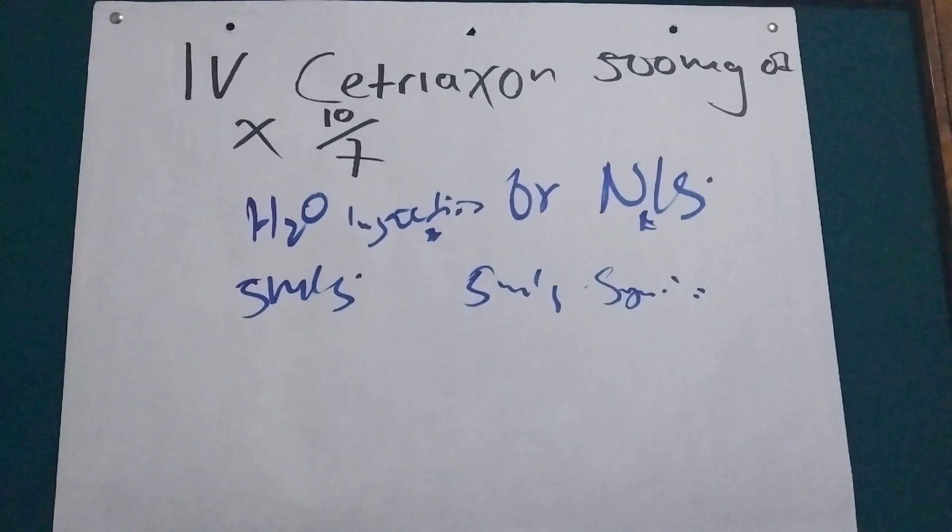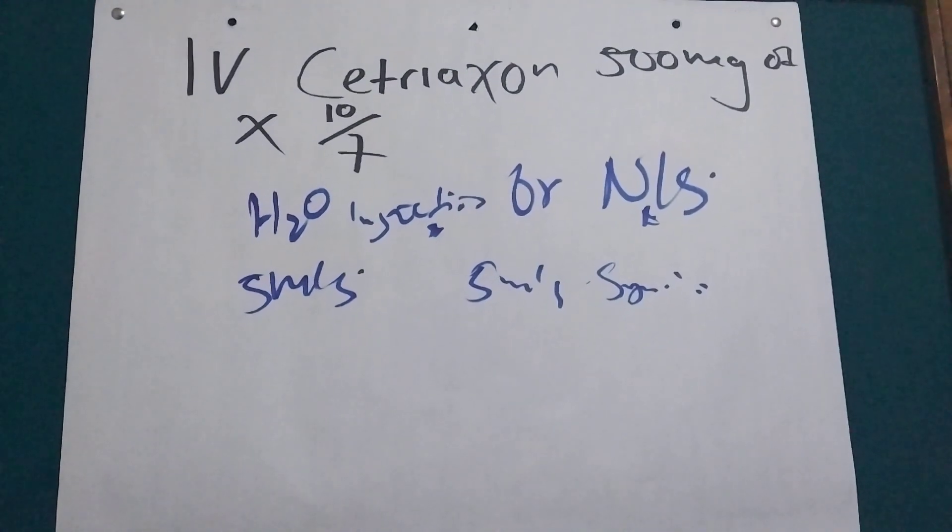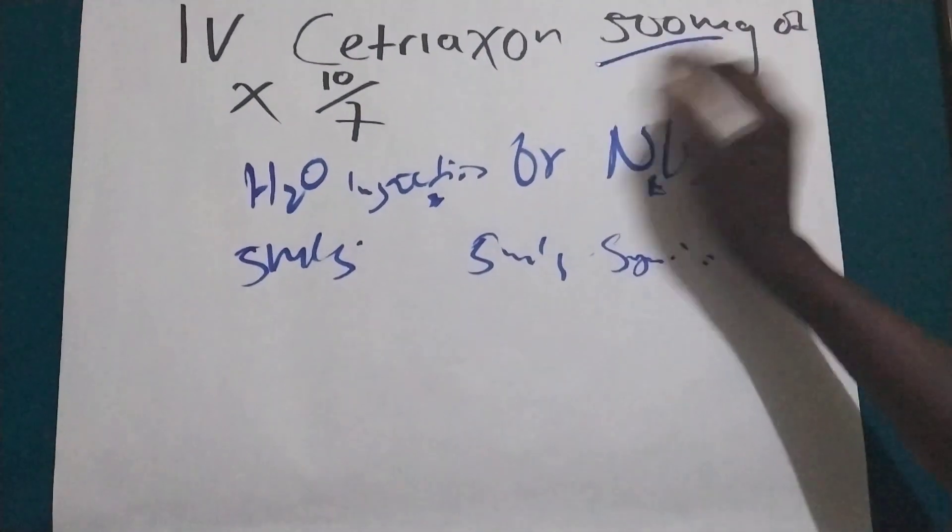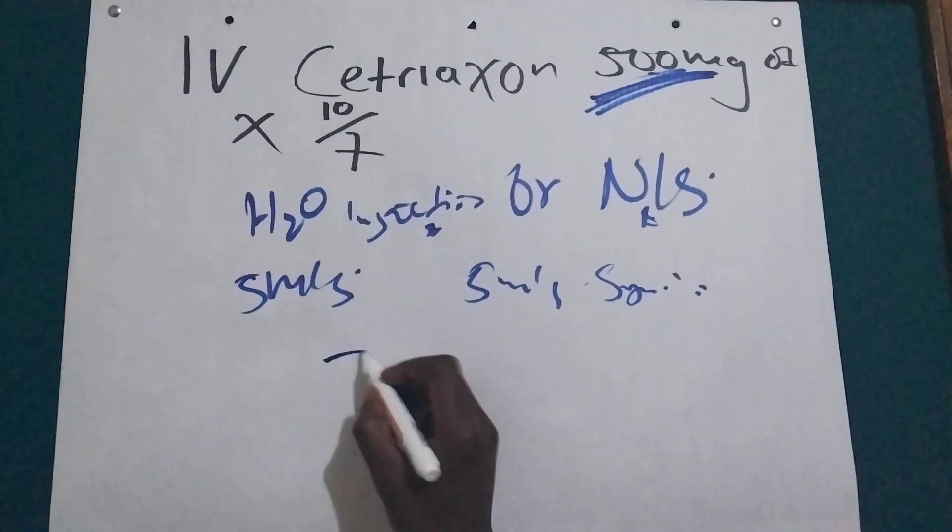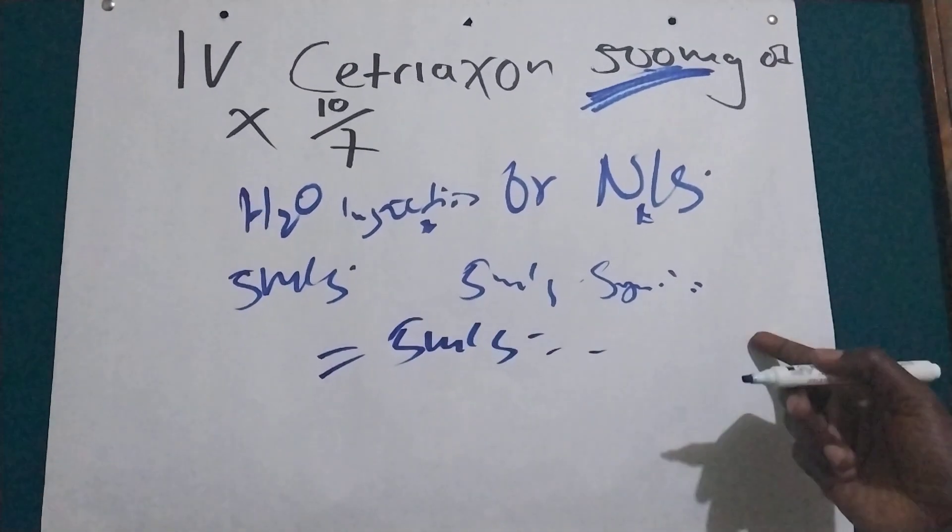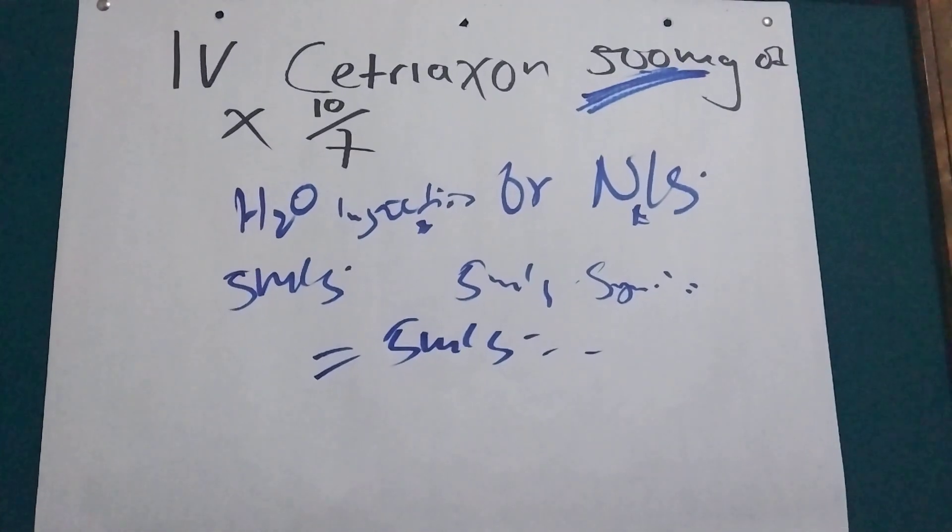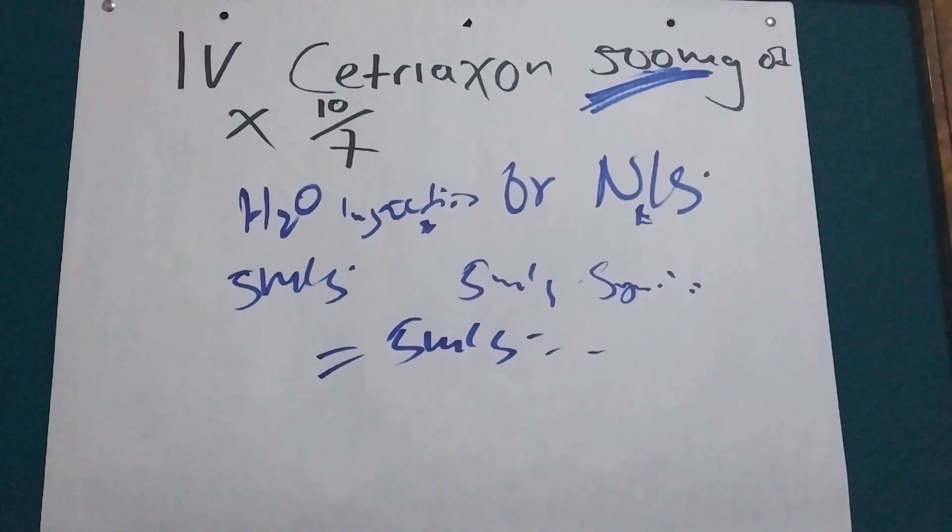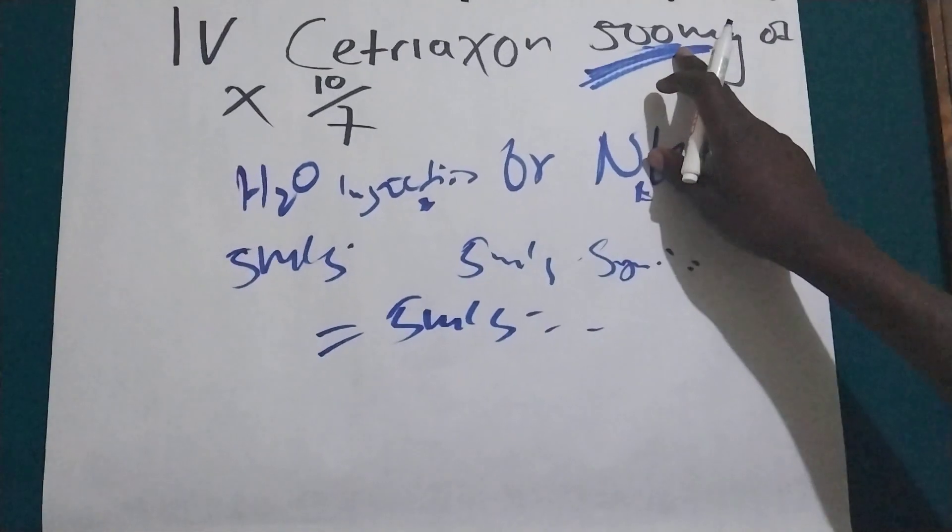And you just put it in the vial and if doctor has prescribed this one, we are going to just aspirate that five mils and we give. So how about if doctor has prescribed 500 milligram but you don't have the vials?